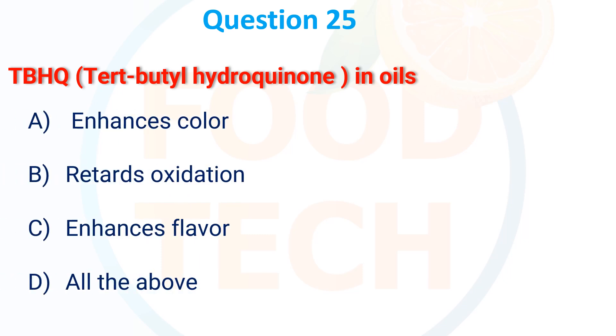TBHQ (Tertiary Butyl Hydroquinone) in oil: A. Enhances the color, B. Retards oxidation, C. Enhances the flavor, D. All of the above. The correct answer is retard oxidation.